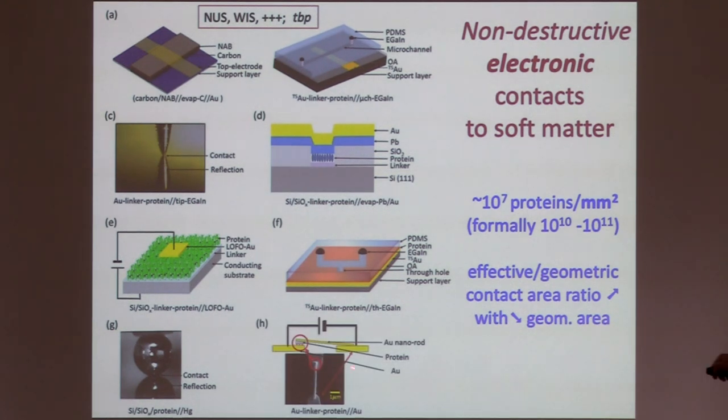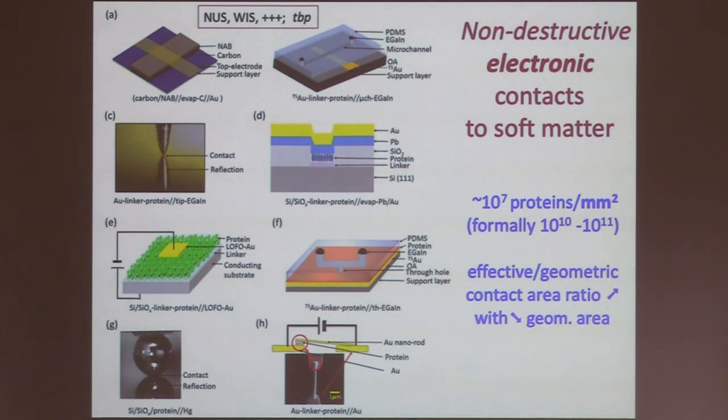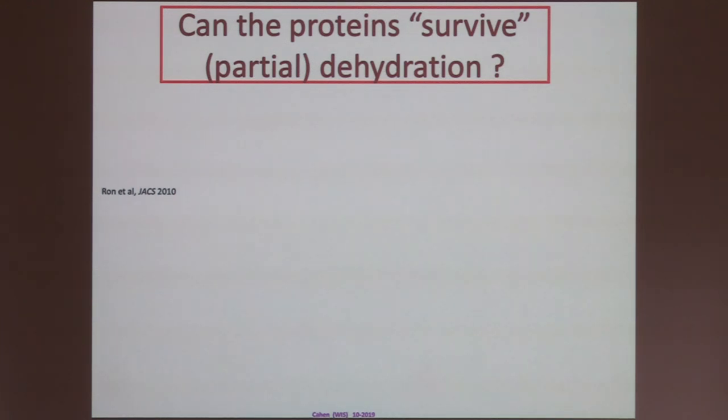And that is with a nanorod. So, why? Because, geometrically, you find that you may have a million, ten million proteins per square millimeter. Well, formally, it should be three to four orders of magnitude larger. Chris has done a lot of work on trying to nail that number down. And it's the difference between the effective and the geometric contact area. But that difference decreases as your geometric area decreases. And so, that is where a method such as this, where this is one micron, comes in handy, because then you may be able to reduce the difference to one to two orders of magnitude. Naturally, if you come to true single molecule, then the ratio is one.